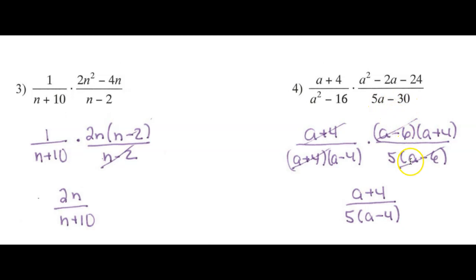The denominator, I can factor out a 5. It's going to leave me a minus 6. So those a minus 6s will cancel. I am just going to be left with a plus 4 in the numerator and 5 times a minus 4 in the denominator.